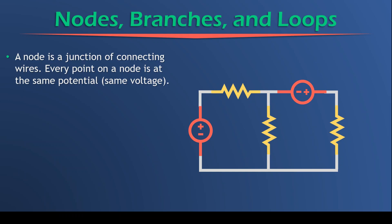So what is a node? If we look at the circuit on the right hand side, we can define a node as a junction of connecting wires. Every point on a node is at the same potential, in other words, the same voltage. So a node is a point of connection between two or more elements or two or more branches, which we'll define a bit later.